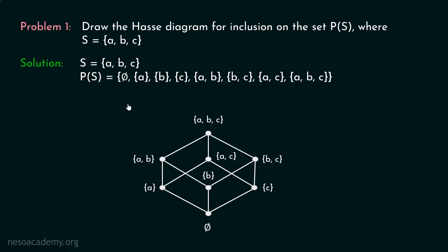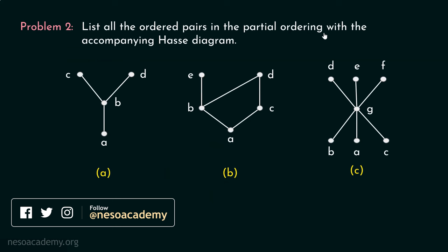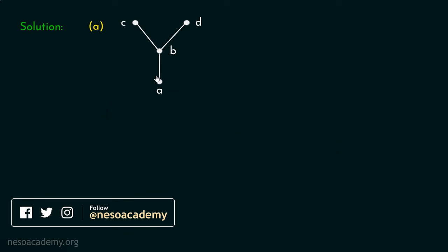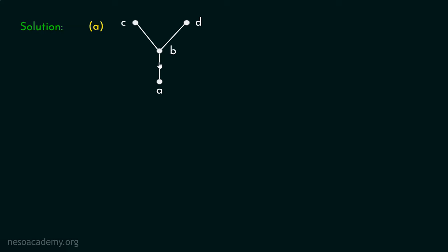Now let's consider problem 2: List all the ordered pairs in the partial ordering with the accompanying Hess diagram. We have several Hess diagrams and must list all ordered pairs associated with each. A partial order is reflexive, anti-symmetric, and transitive. We will use these three properties to list all elements from each Hess diagram.